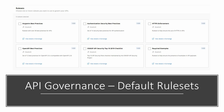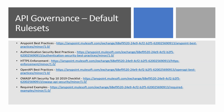By default, Mulesoft provides the following rulesets: Anypoint Best Practices, Authentication Security Best Practices, HTTPS Enforcement, OpenAPI Best Practices, OWASP API Security Top 10 2019 Checklist, and Required Examples. Each ruleset contains a number of rules. You can navigate to the provided links to see what rules are included in each ruleset.